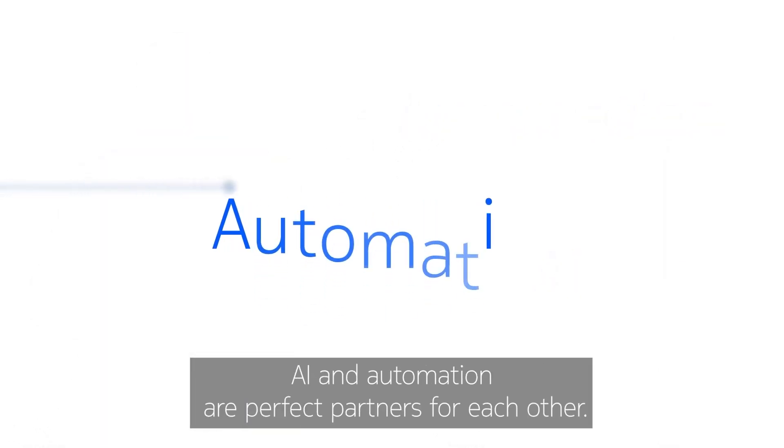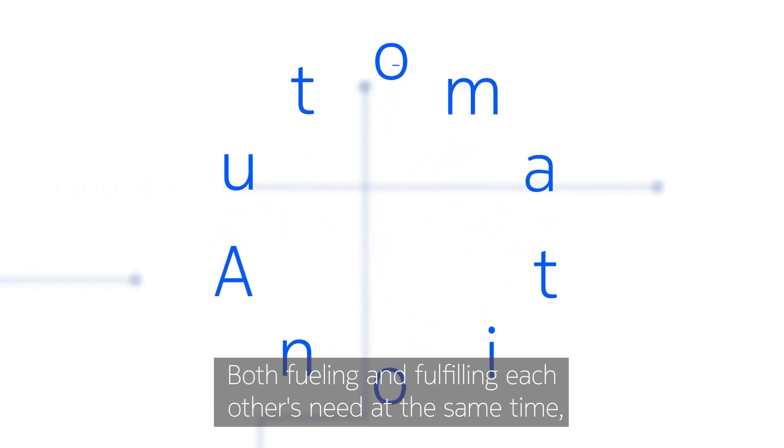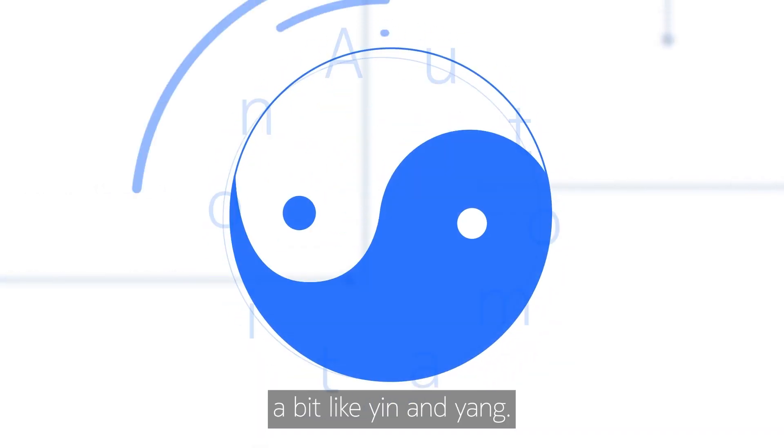AI and automation are perfect partners for each other, both fueling and fulfilling each other's need at the same time, a bit like Yin and Yang.